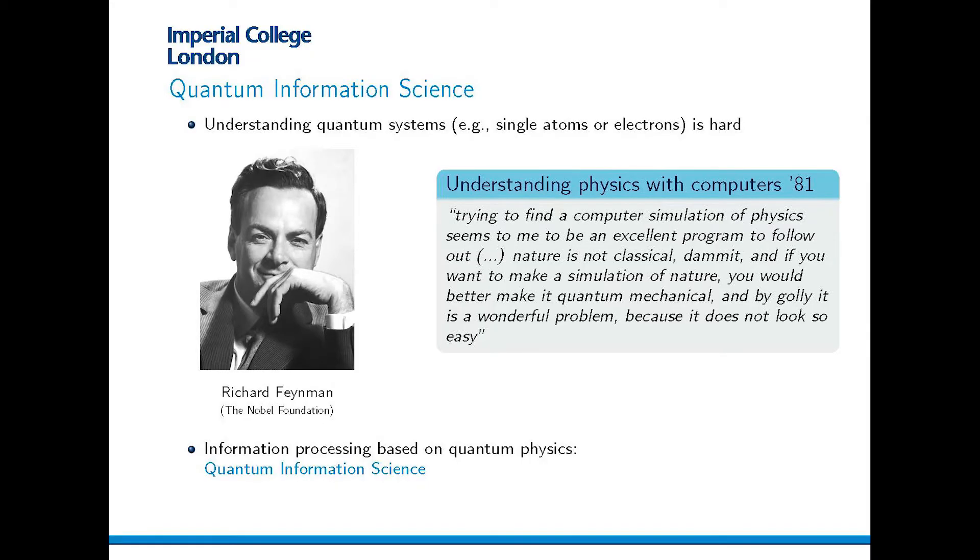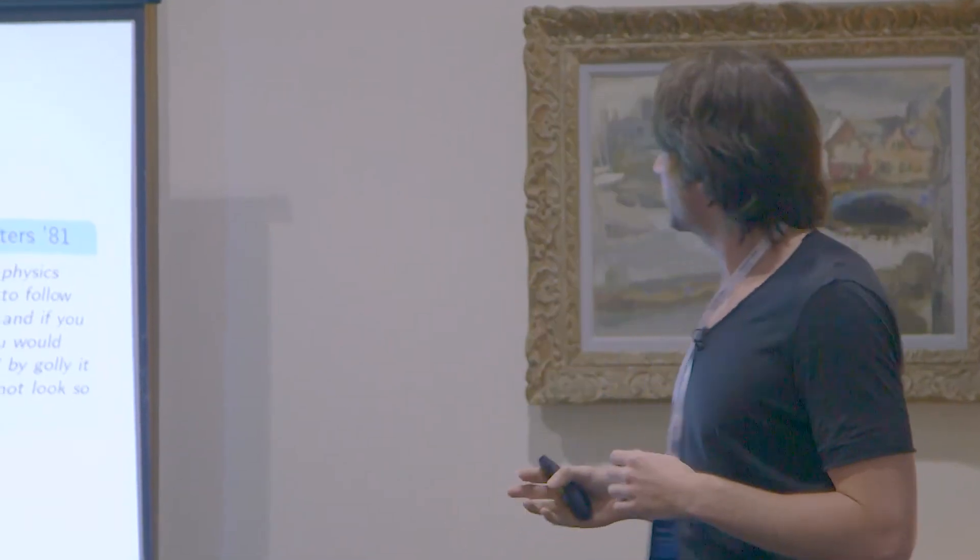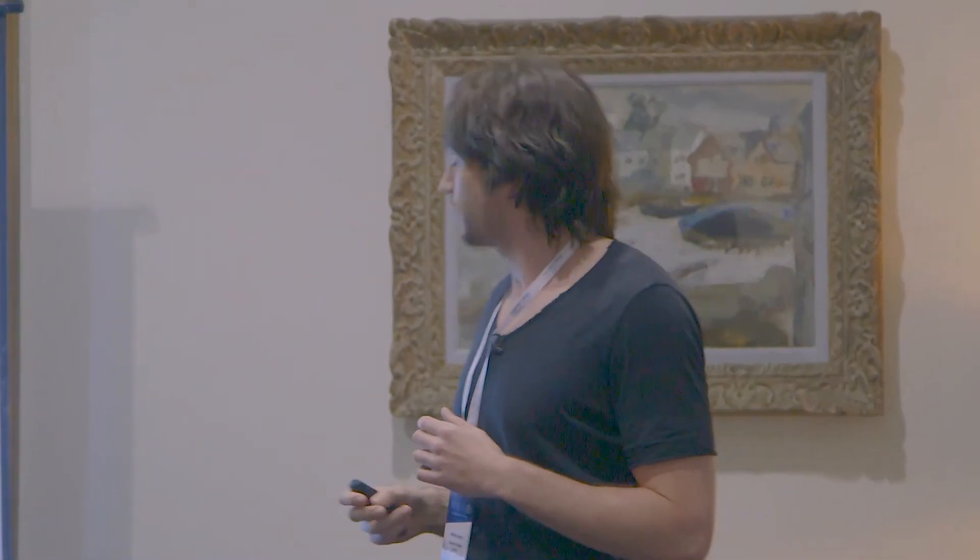So let me quote Feynman here on something he said in 1981 on understanding physics with quantum computers. Trying to find a computer simulation of physics seems to me to be an excellent problem to follow out. However, nature is not classical, damn it. And if you want to make a simulation of nature, you better make it quantum mechanical. And by golly, it's a wonderful problem because it does not look so easy. And so that was like more than 35 years ago, right?